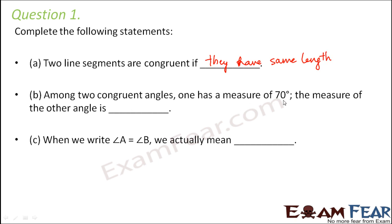Among two congruent angles, one has a measure of 70 degrees — what is the measure of the other angle? For two congruent angles, the criteria is that their measures should be equal. So if one is 70 degrees, the other is also 70 degrees. When we write angle A is equal to angle B, we actually mean the two angles are congruent — angle A is congruent to angle B.